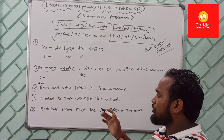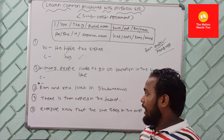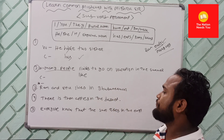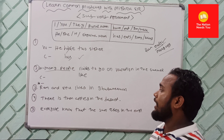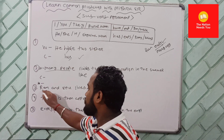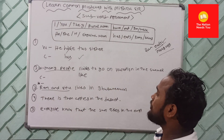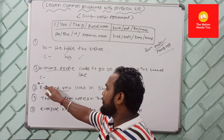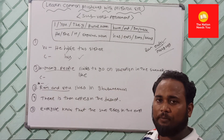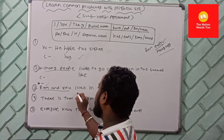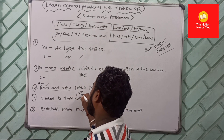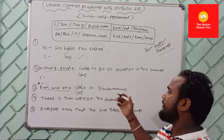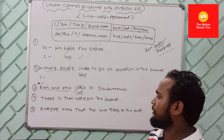Question number three: 'Ram and Situ lives in Bhubaneswar.' Ram and Situ — this is going to be plural. They are individual people, but together they are considered plural. So 'lives' is incorrect. The correct sentence is: 'Ram and Situ live in Bhubaneswar.'